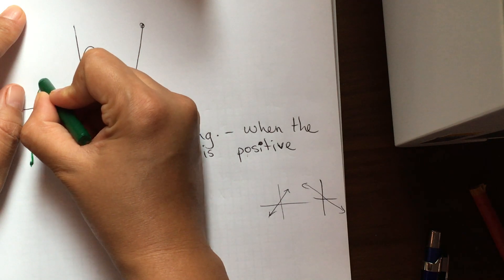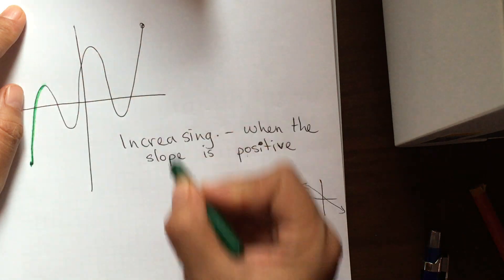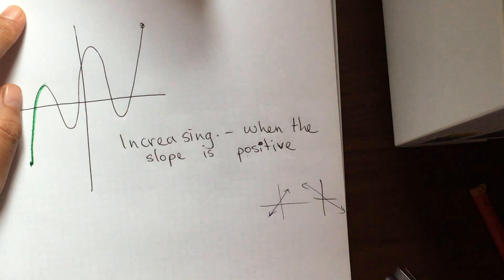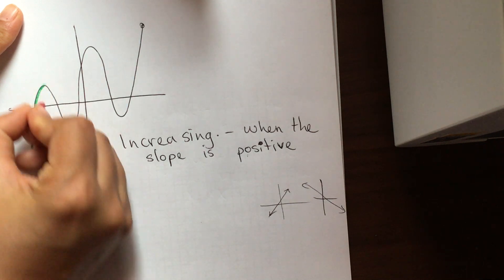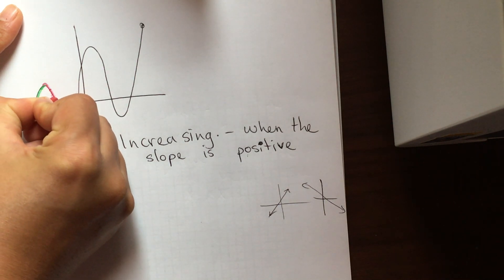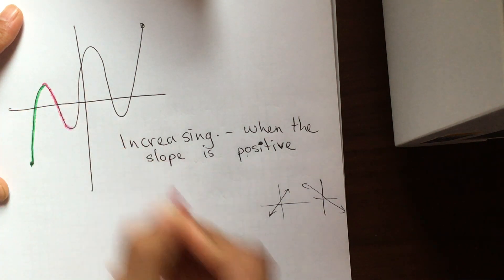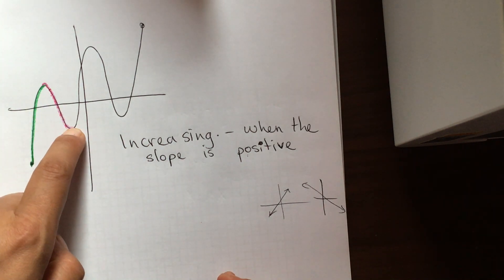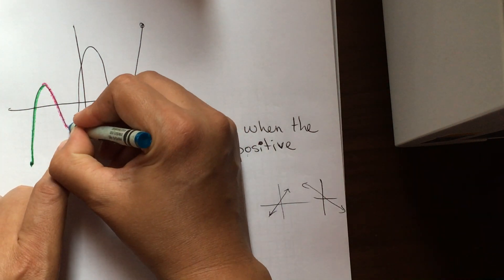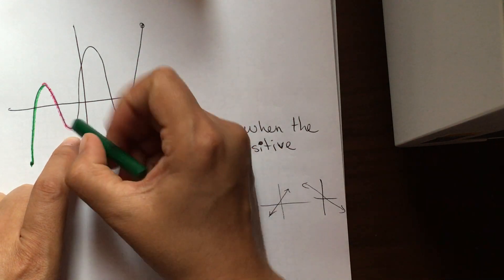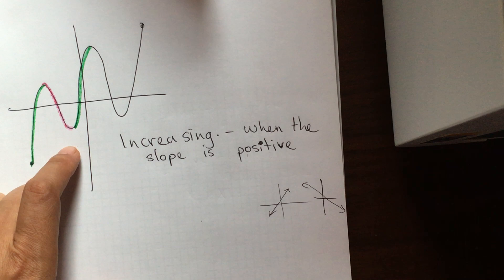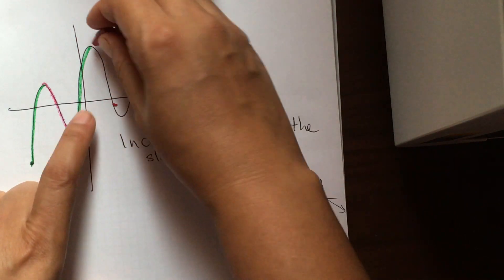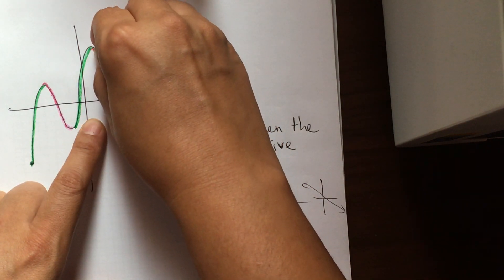At the peak point, the slope is zero, and then from there going down the slope is negative — it's going down from left to right. Then again it starts increasing. The definition for decreasing is when the slope is negative.